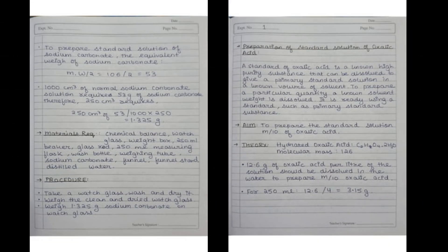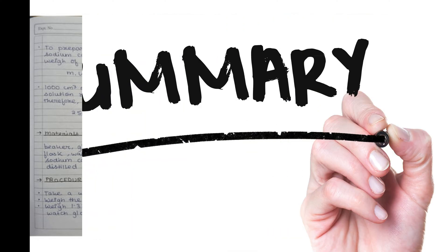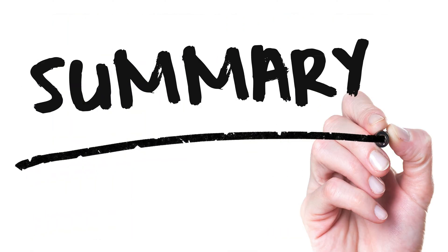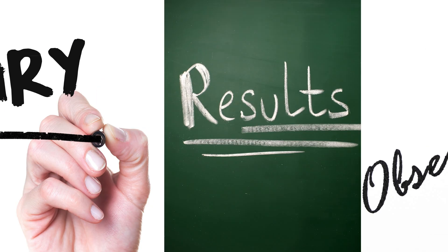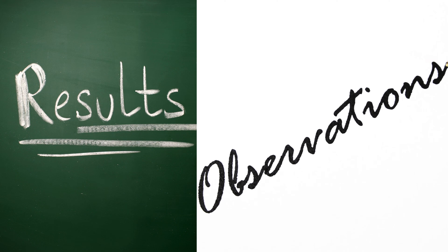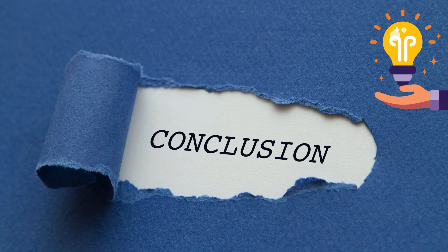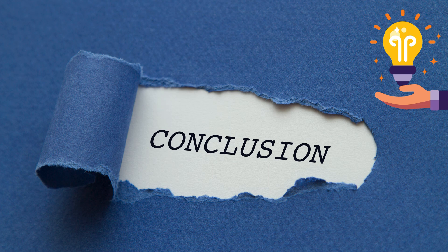Results: provide space for students to summarize the outcome of the experiment. This could be a calculated result, a final observation, or a conclusion based on the experiment's objectives.